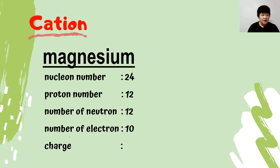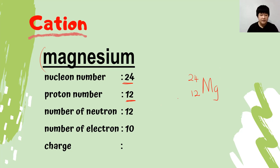Now let's write the isotope notation for magnesium. The symbol is Mg, the nucleon number is 24, and the proton number is 12. Do we have a charge? The proton number is 12 and the number of electrons given is 10, so the proton number exceeds the electron number by 2. Therefore, the charge is 2+. This is a cation isotope notation.